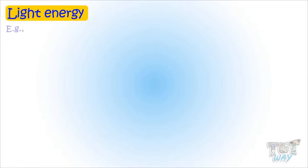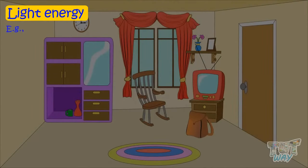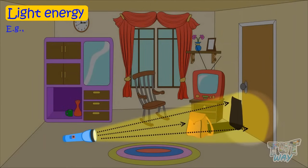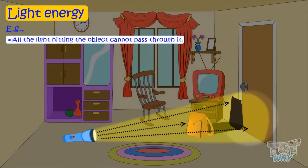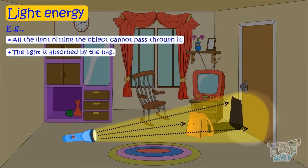Here is an example. If we strike light on a solid object, say a bag, the light hitting the bag will not pass through it. It will be absorbed by the bag as it's a solid object. Very little amount of light will pass through them.